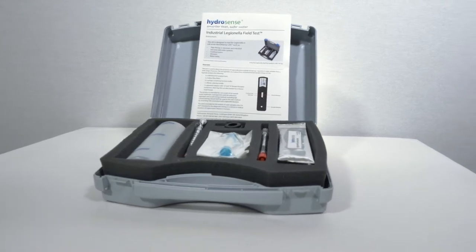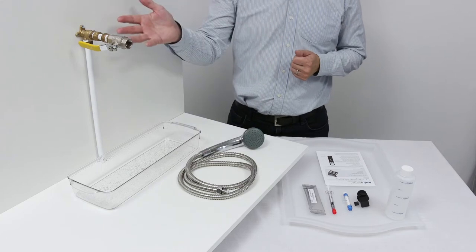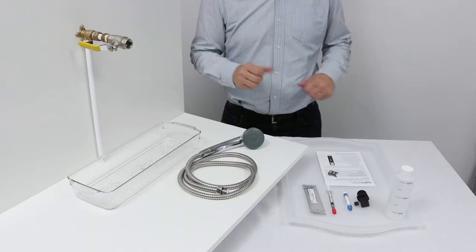The industrial field test kit has a number of uses. It can be used for sampling from a shower or from pipe fittings, and it's also suitable for cooling towers and hot and cold water systems where you have access to a pipe fitting.